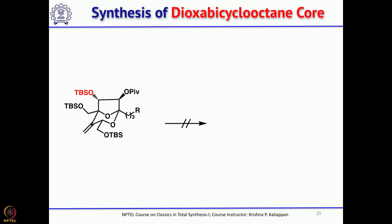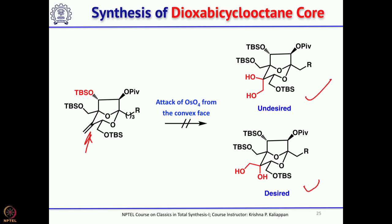The next goal was to functionalize the exocyclic double bond, but dihydroxylation with osmium tetroxide only gave the undesired diol from the convex face. So instead, the group went back to the ketone and added lithium trimethylsilylacetylene, which attacks from the equatorial side as the major product in a 6:1 ratio.